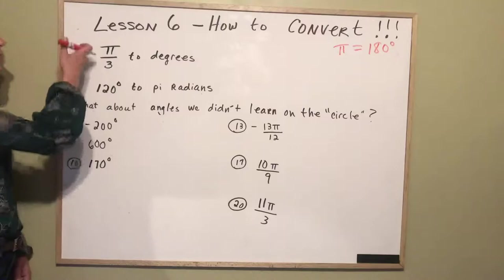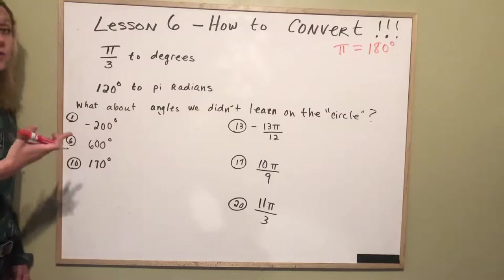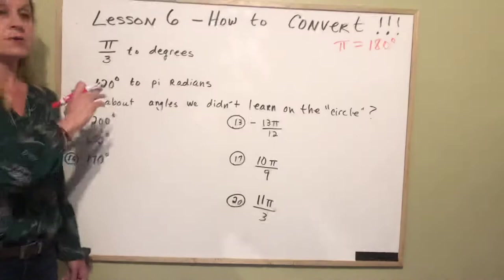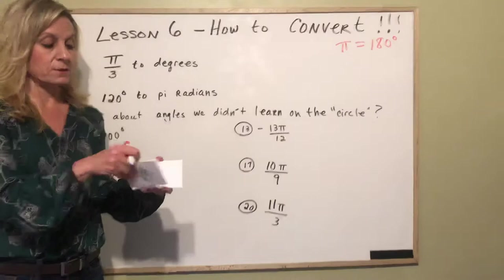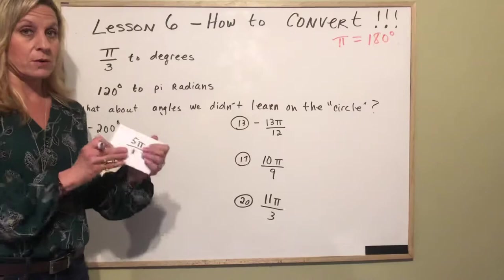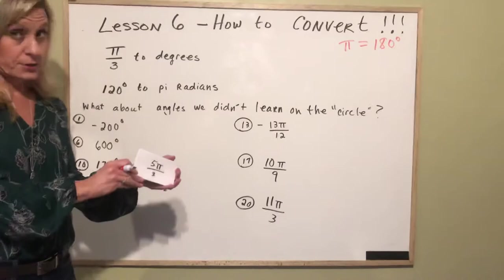So I've chosen two angles that already fall on the unit circle and hopefully at this point you can look at pi over 3 and say that's 60 degrees and you can look at 120 degrees and say that's 2 pi over 3. And the reason that you can do that is because you have practiced your note cards and you've looked at these note cards. Maybe you've had a family member quiz you to make sure that you know how to go from degrees to terms of pi and terms of pi to degrees and spend some time with your unit circle.